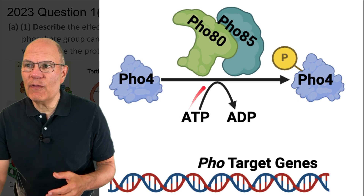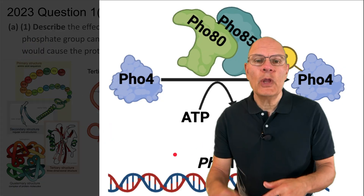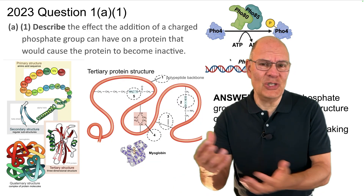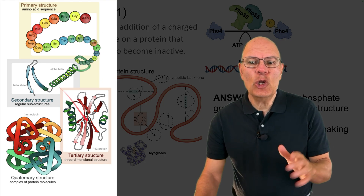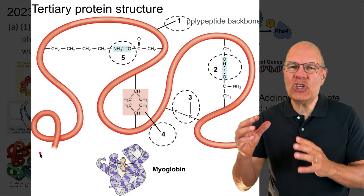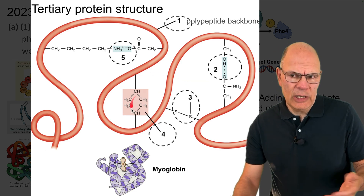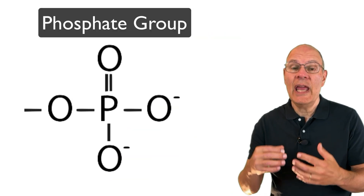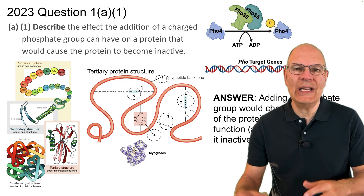FOX4 is becoming phosphorylated by the FOX80/FOX85 complex and is not acting as a transcription factor. To justify this: proteins have primary, secondary, tertiary, and quaternary structure. At the secondary, tertiary, and quaternary levels, the protein shape is stabilized by internal bonds including ionic bonds, hydrogen bonds, hydrophobic clustering, and disulfide bridges. If you attach a charged functional group like a phosphate group to the protein, there can be a ripple effect throughout the protein, changing its shape.